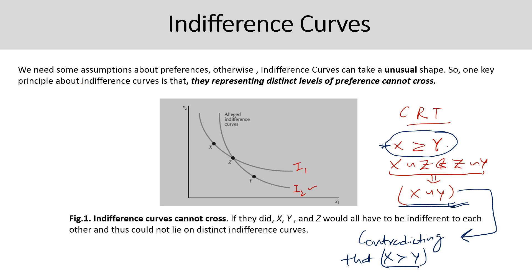By contradiction, we have established that indifference curves representing distinct levels of preferences cannot cross. This is the key takeaway from this slide.